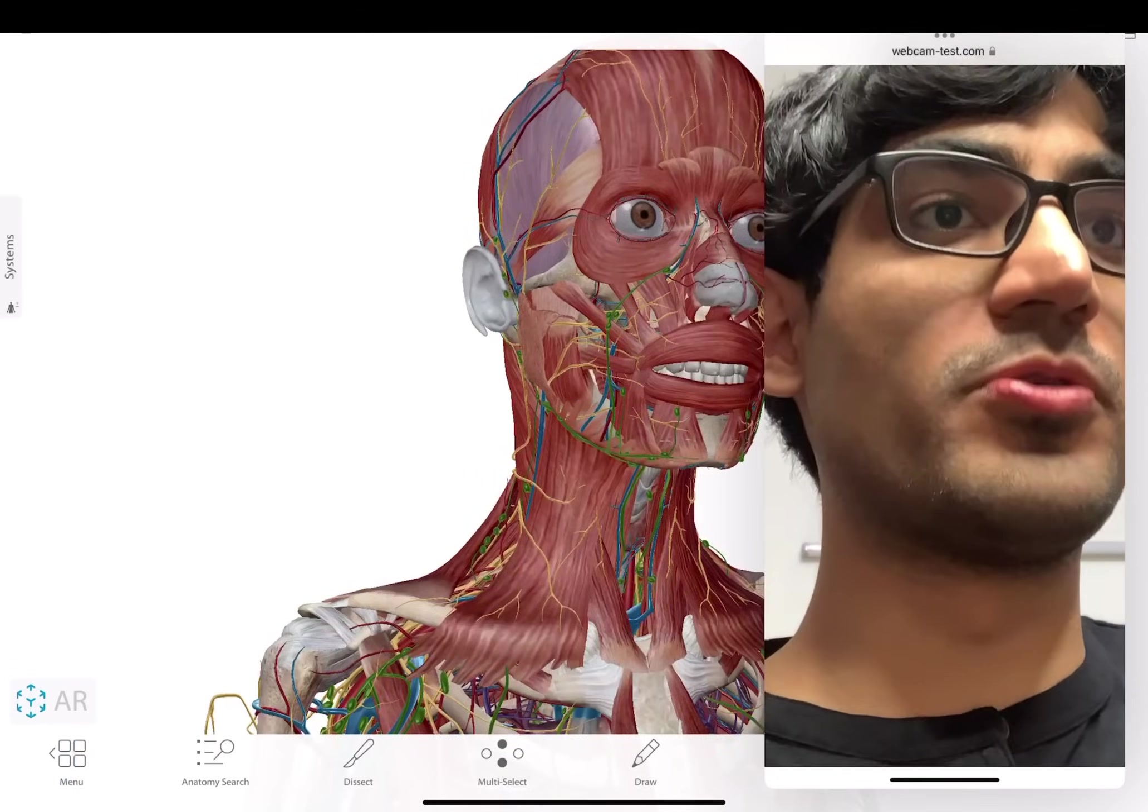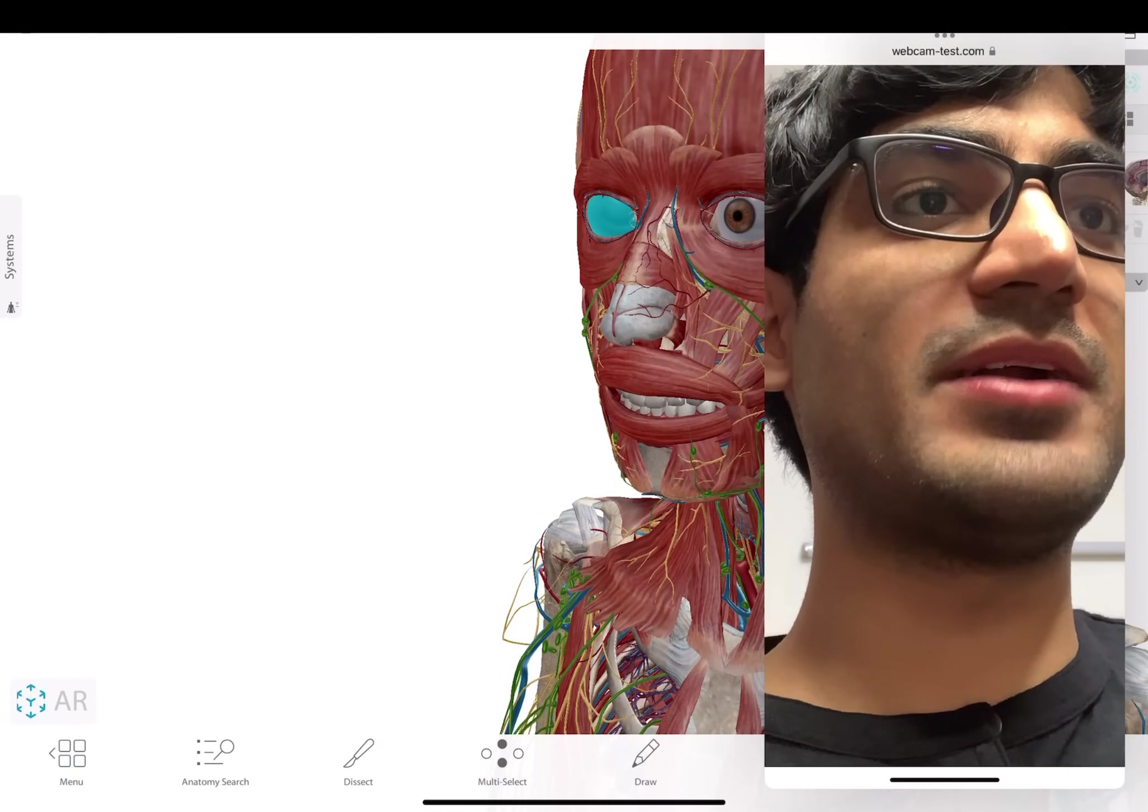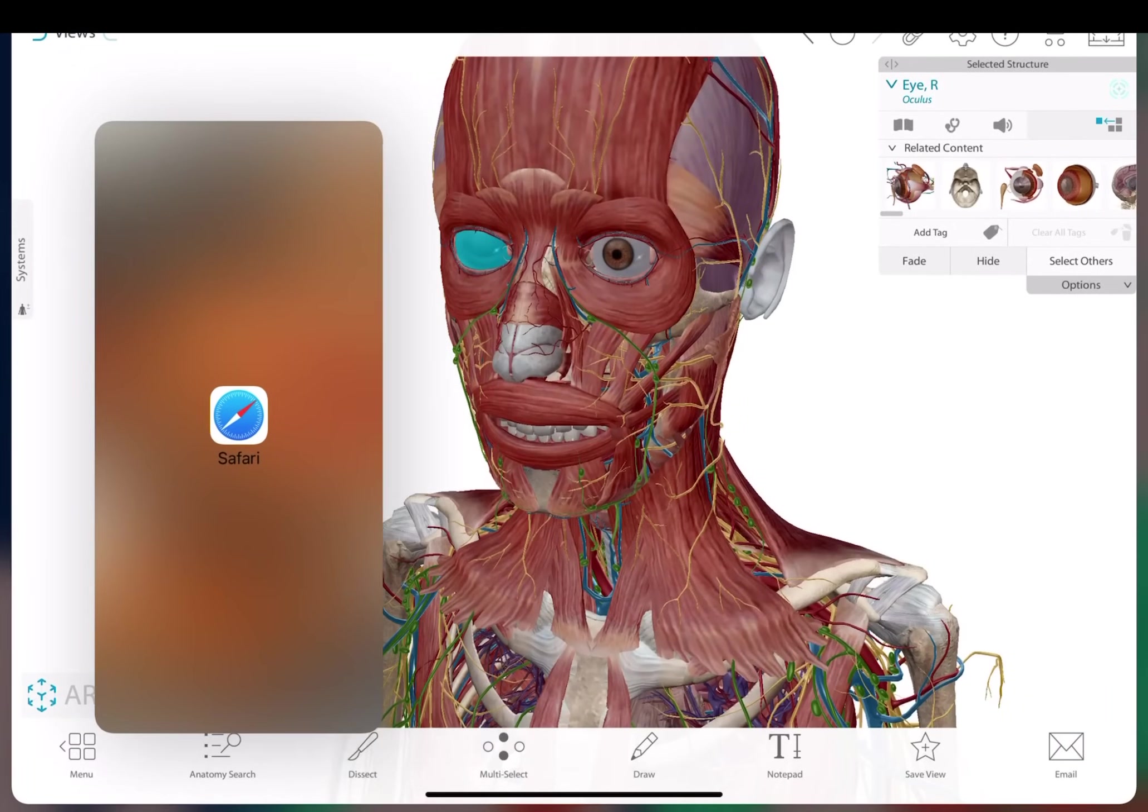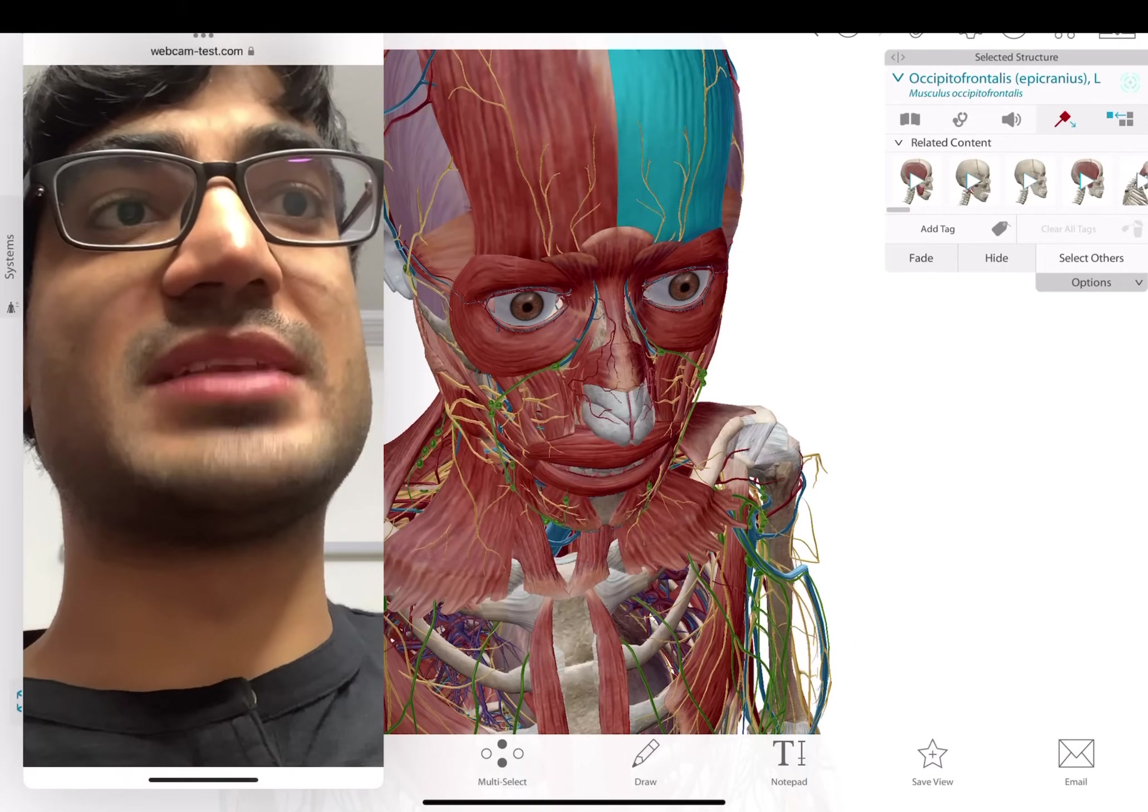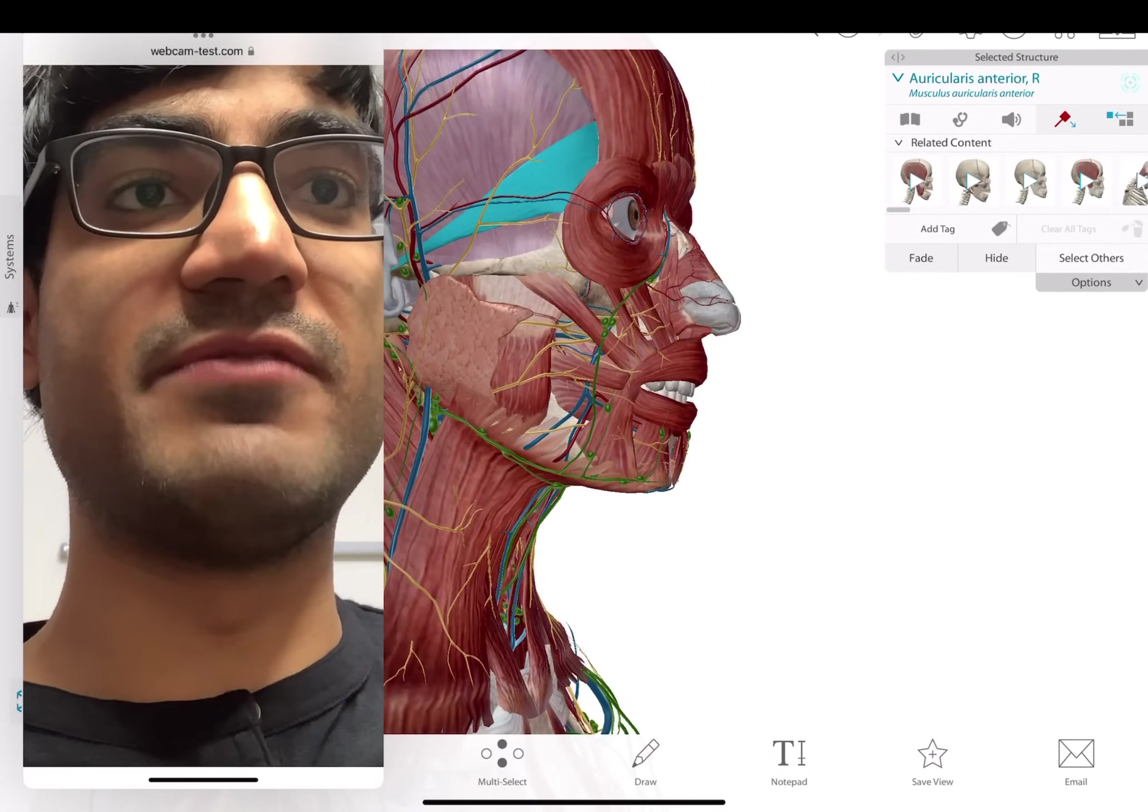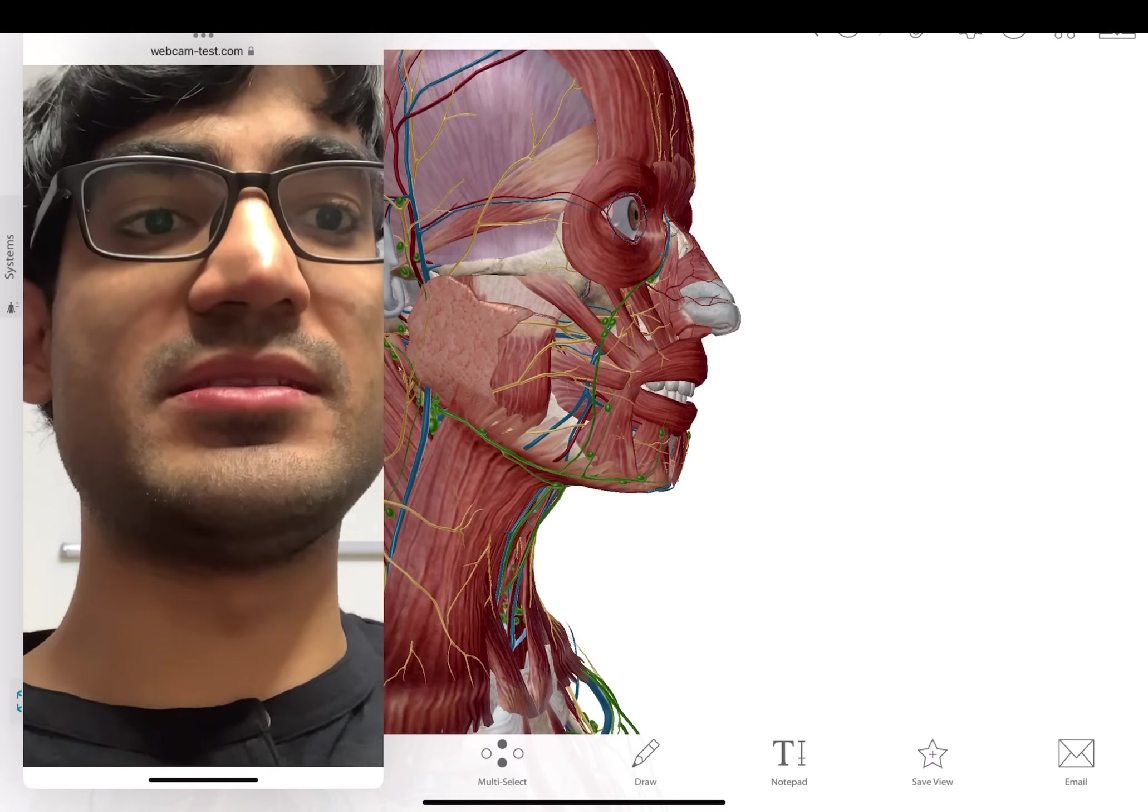You can look at this is the eye. Let me just show it to you one second. And then you can see different muscles like occipital frontalis. And then you can even look at nerves, which is really helpful. And it is all in 3D. And then there are other things.